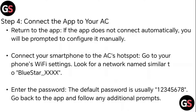Step 4: Connect your AC to the app. Return to the app. If the app does not connect automatically, you will be prompted to configure it manually. Connect your smartphone to the AC's hotspot by going to your phone's Wi-Fi settings and looking for a network named similar to Bluestar.